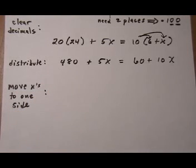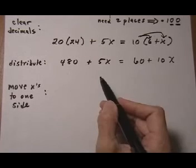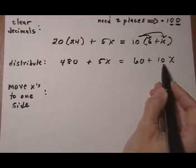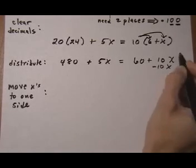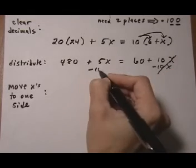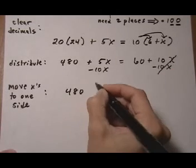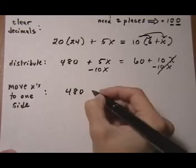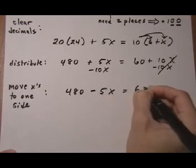So I'll call that the move x's to one side step. And you always do that by using the addition property. You add or subtract the same thing to both sides of the equation. So let's go ahead and get the x's to go to the left which means I need to subtract the 10x here so it cancels out and moves over there. So bring down the 480 and now we have 5 minus 10 gives us take away 5x, bring down the 60.